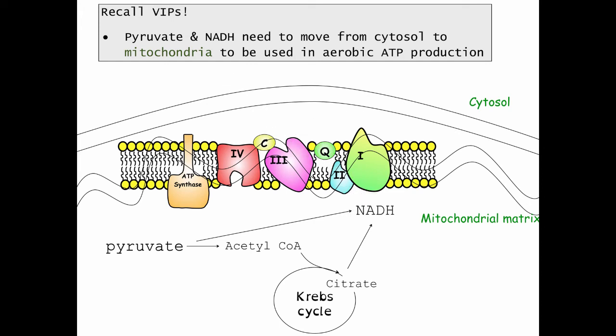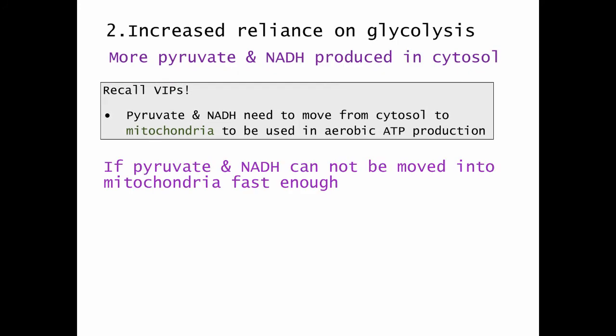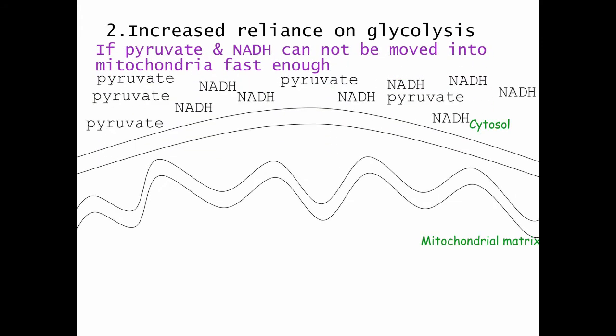In addition, NADH also needs to move into the mitochondrial matrix where electrons and hydrogens are donated to the electron transport chain and a whole bunch of ATP is produced. However, sometimes pyruvate and NADH is produced so quickly it cannot move into the mitochondria at the same speed in which it's produced. So as an example, here we have pyruvate moving into the mitochondria at the same rate it's being produced. NADH is moving into the mitochondria at the same rate it's being produced. And so we really have an accumulation of pyruvate and NADH in the cytosol because glycolysis is going so quickly.